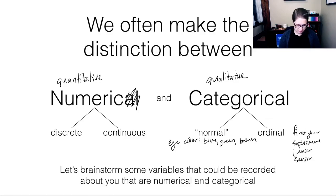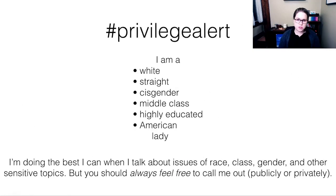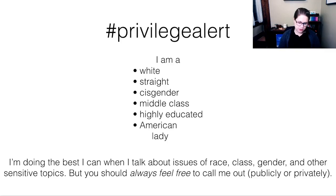When we have synchronous time together, we'll brainstorm some variables that could be collected about a person that are both numeric and categorical. One of my key points in this course is that data can seem neutral, but it's always generated by humans. I do a privilege alert here: I am white, straight, cisgender, middle class, highly educated with a PhD, American, and a woman — that's maybe my only avenue where I don't have massive privilege. I'm always doing my best when I talk about issues like race, class, and gender, but you can always feel free to call me out if I'm being inappropriate — publicly, in a comment on this video, anonymously, or in private.